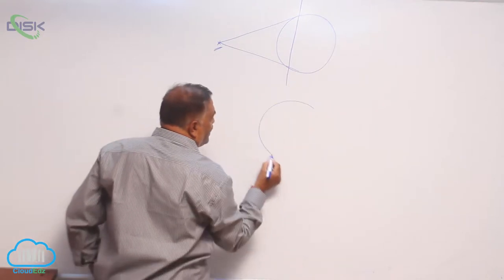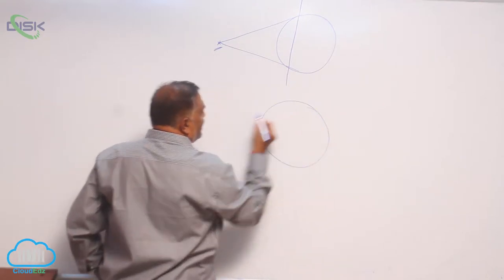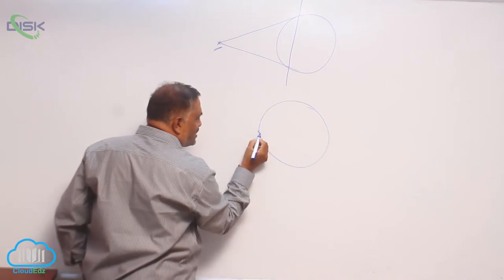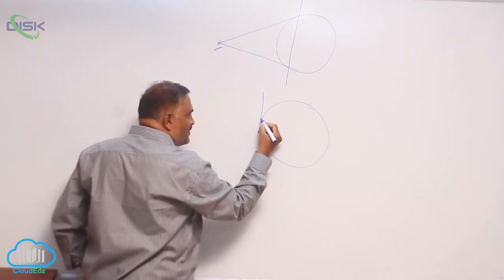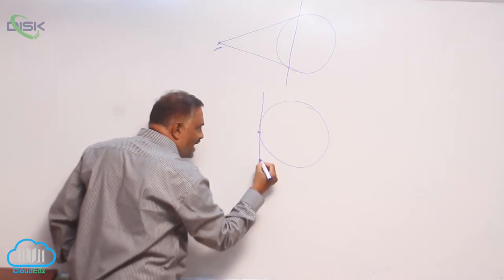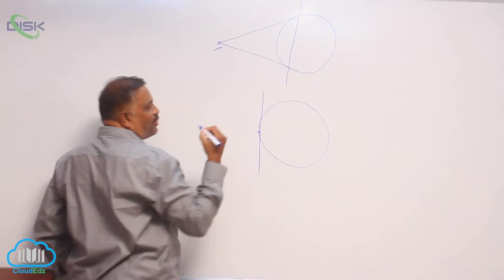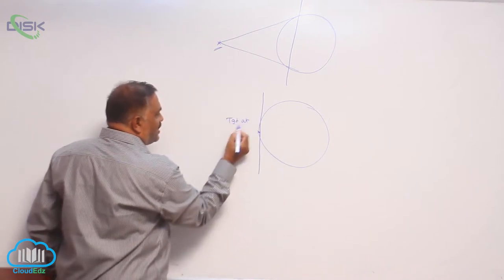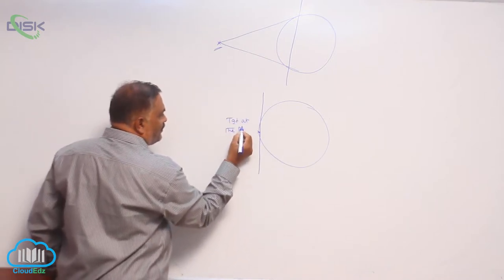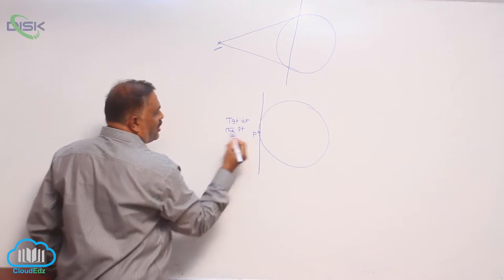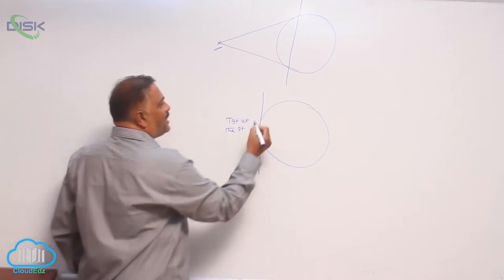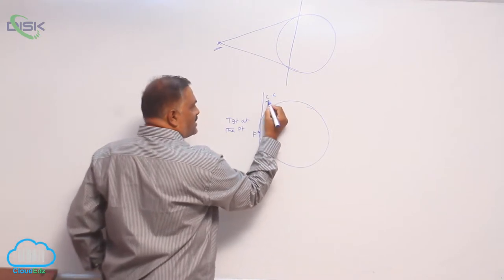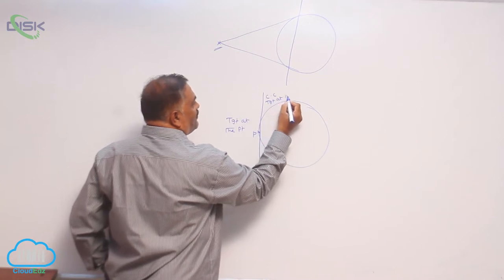When the point is approaching towards the circle and lies on the circle, it coincides with the tangent at that point. This is the tangent at point P — the chord of contact is the same as the tangent at that point.